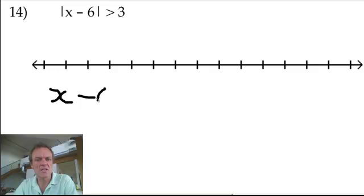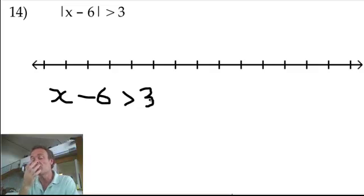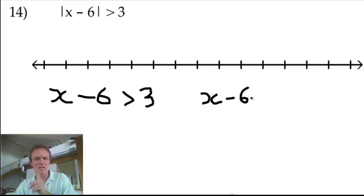x minus 6 is greater than 3. That's one option. And just like with the less than, you always change direction, change sign for the other one. So the x minus 6, greater than, so I'm going to put less than negative 3.